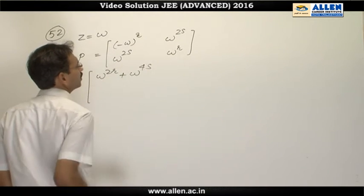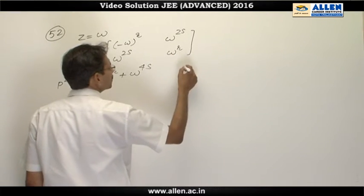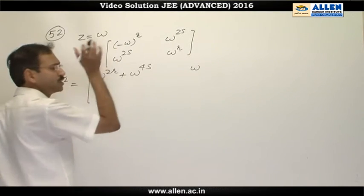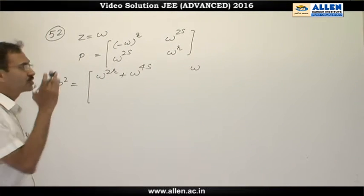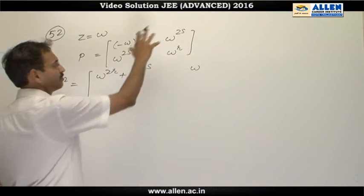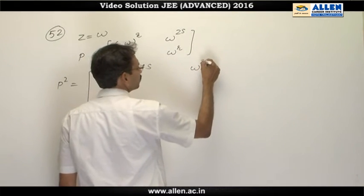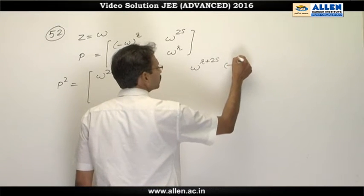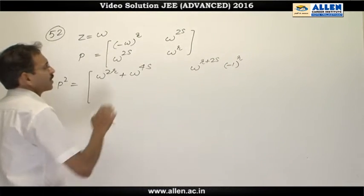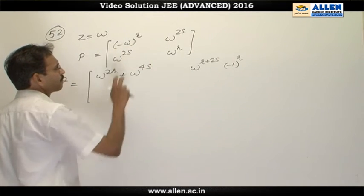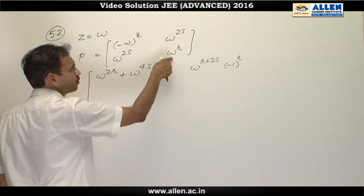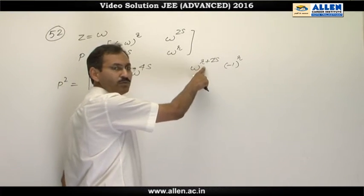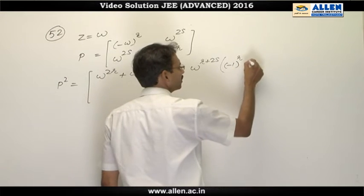For the first row, second column multiplication, this gives us omega raised to the power — we consider minus omega to the power r as minus 1 raised to the power r times omega raised to the power r, then multiply: omega raised to the power r plus 2s multiplied by minus 1 raised to the power r. Then omega raised to the power 2s multiplied by omega raised to the power r gives omega raised to the power r plus 2s again. We can take it common, giving plus 1.